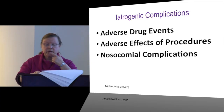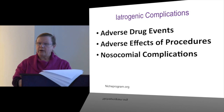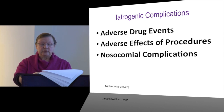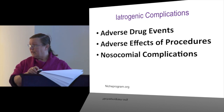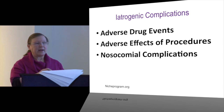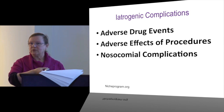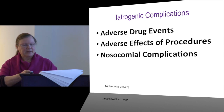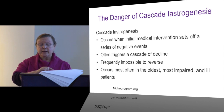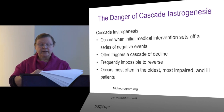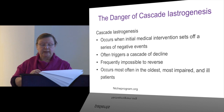The three main iatrogenic complications we see are: number one, adverse drug events; number two, adverse effects related to procedures; and number three, nosocomial complications — meaning hospital-acquired conditions. Nosocomial means we give these to you for free: MRSA, infections, urinary tract infections, or pneumonia. There's another issue with iatrogenesis — an initial medical intervention may actually set off a series of negative events called cascade iatrogenesis, which triggers a kind of decline that is frequently impossible to reverse, and occurs most in the oldest, most ill, and most impaired.